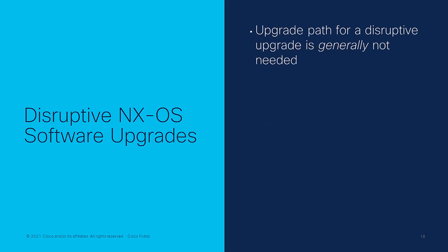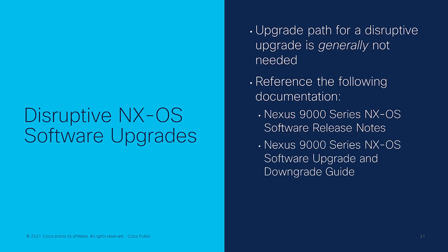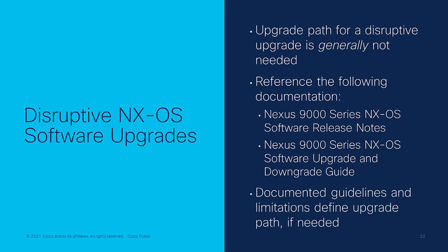Nexus 9000 series switches tend to be lenient when it comes to upgrade paths for disruptive NXOS software upgrades. A specific upgrade path is usually not needed, which means a direct upgrade between any two NXOS software releases is usually possible. However, Cisco recommends referencing the Nexus 9000 series NXOS software release notes and upgrade and downgrade guides for any limitations or caveats that may apply to your switch, its configuration, or its role in the network. If no documented limitations or caveats apply, a direct upgrade between any two NXOS software releases is possible.